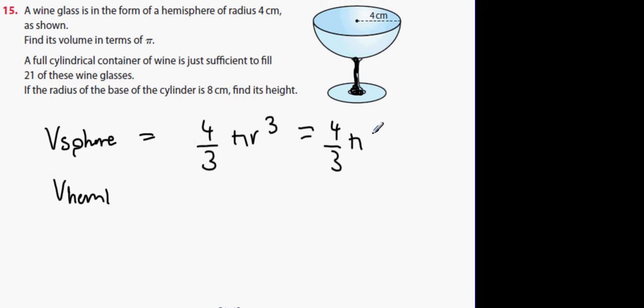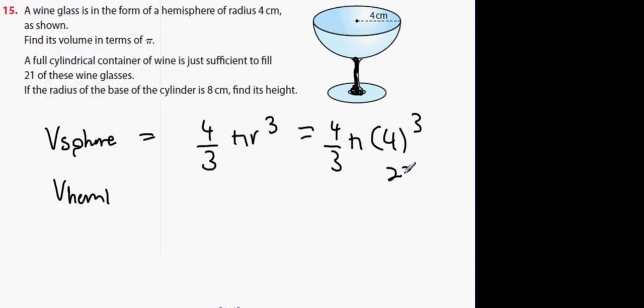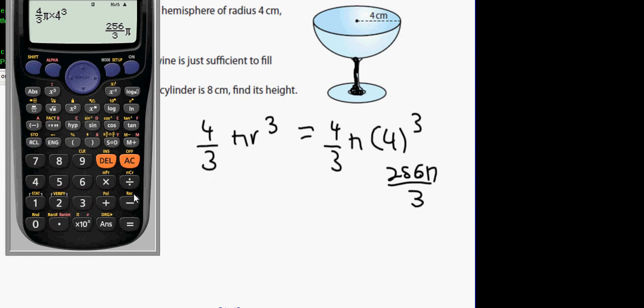Find its volume in terms of π. It wants me to leave it in terms of π. So 4 over 3 by 4 cubed, anybody? 256 over 3 π. Now we're going to divide that in half. So that's 256 π over 3. However I need it divided in half for the hemisphere. Divide the answer by 2 and you get 128 over 3 π.